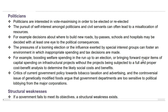Next up is politicians. Politicians are interested in vote-maximizing in order to be elected or re-elected. The pursuit of self-interest amongst politicians and civil servants can often lead to a misallocation of resources. For example, decisions about where to build new roads, bypasses, schools, and hospitals may be decided with at least one eye to the political consequences. The pressures of a looming election or influence from special interest groups can foster inappropriate spending and tax decisions — for example, boosting welfare spending in the run-up to an election, or bringing forward capital spending on infrastructure projects without a full cost-benefit analysis. Critics argue that government departments are too sensitive to political lobbying from major corporations regarding tobacco taxation and genetically modified foods.